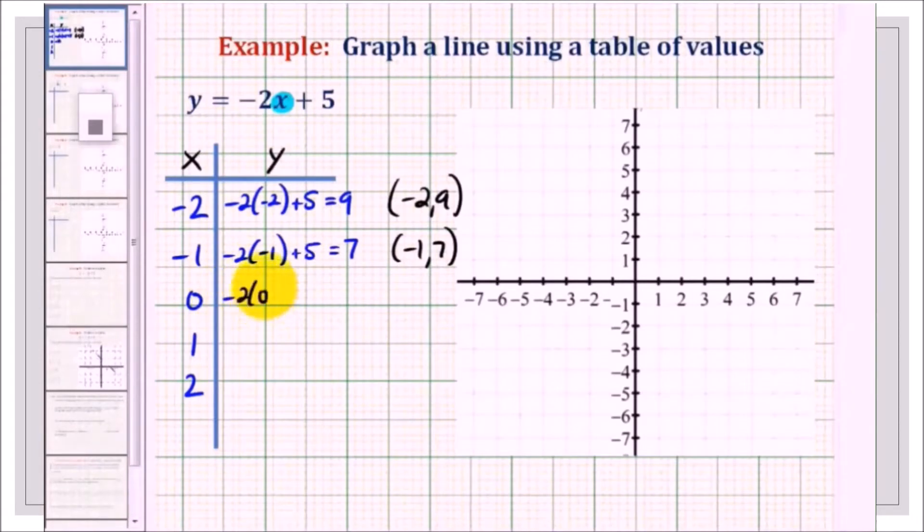Make sure that when you write your pairs, it should be in brackets. Next is negative 1. Negative 2 times negative 1 is 2 plus 5, that is 7. So negative 1, 7 is also a point on the line. Next is 0. That's negative 2 times 0 plus 5, and that is 5. So the point 0, 5 is also on the line.